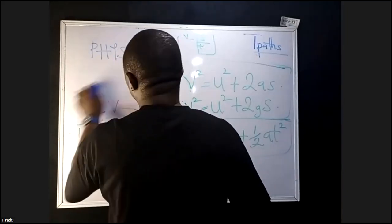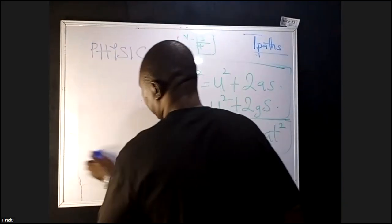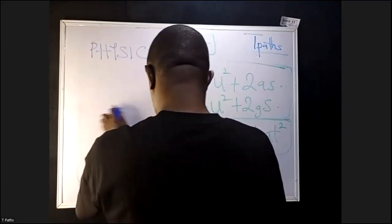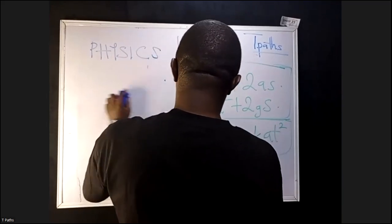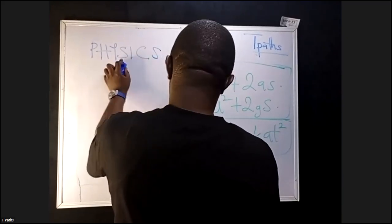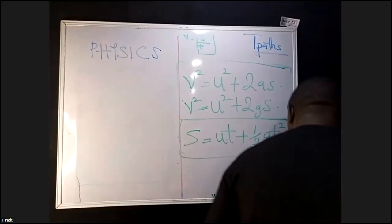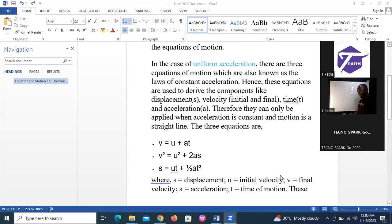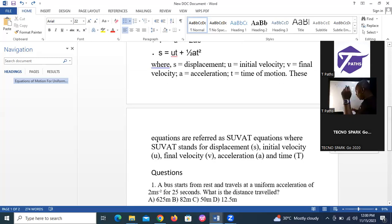Now let's go to the questions. The first question: a bus starts from rest and travels at a uniform acceleration. When you see questions like this in JAMB, just denote them so your work is faster — every question might demand less than one minute. A bus starts from rest, so your U is zero.